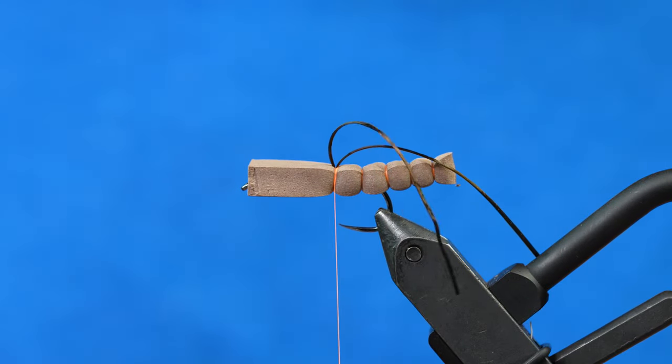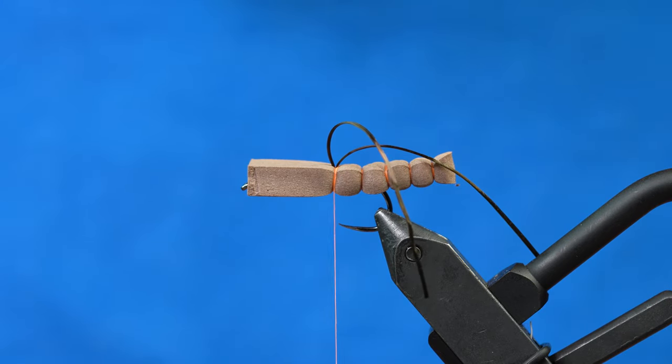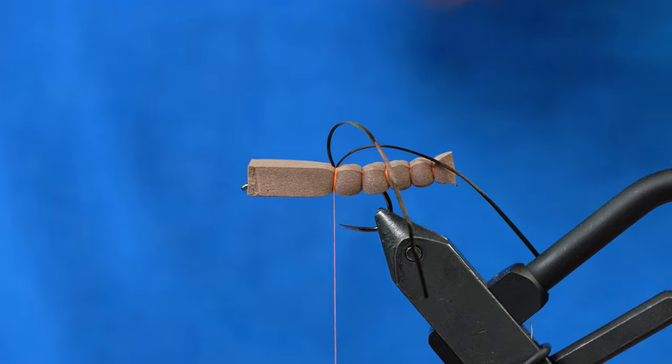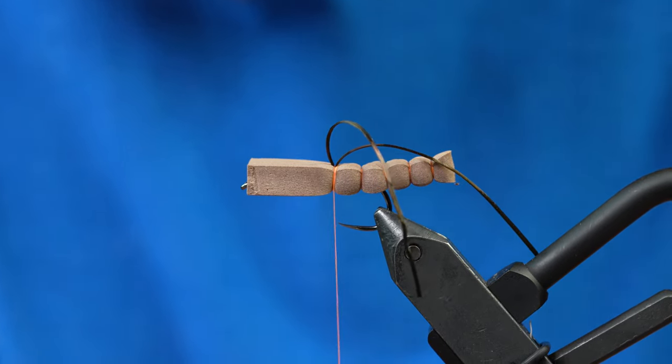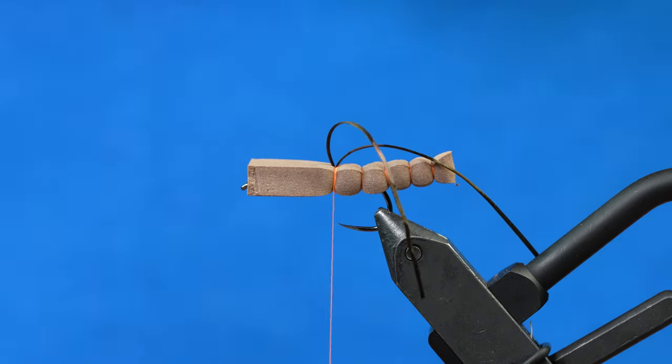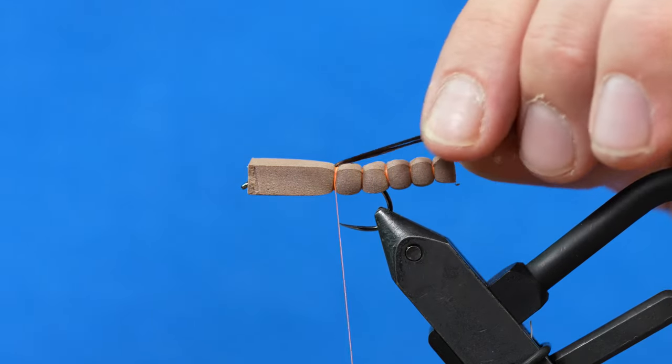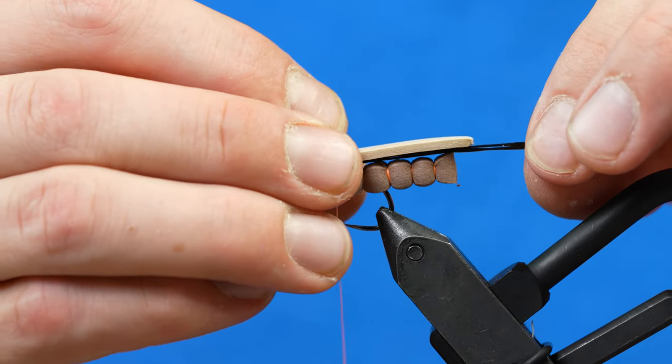I'm going to take the same punch and punch some two mil tan foam. We're going to use that as a wing over the segmented body, which helps it float and also secure those thread wraps down to make a little bit more of a durable fly.